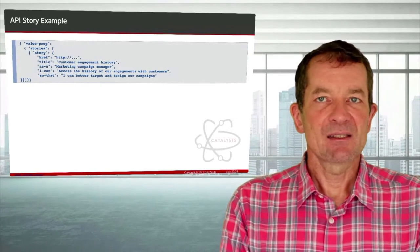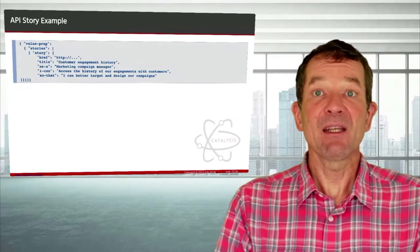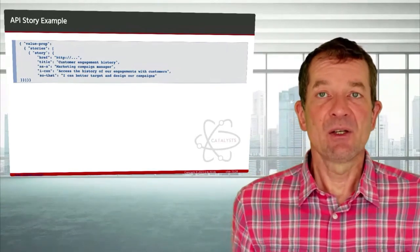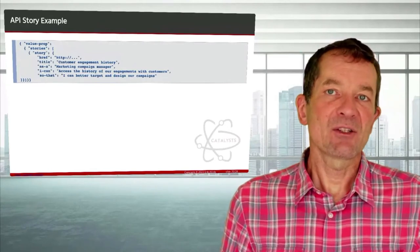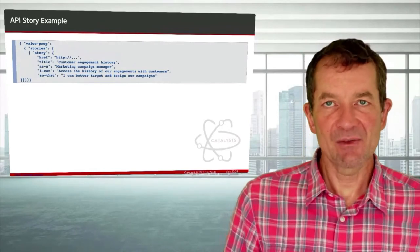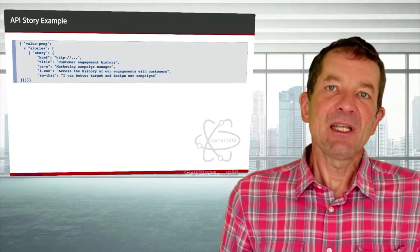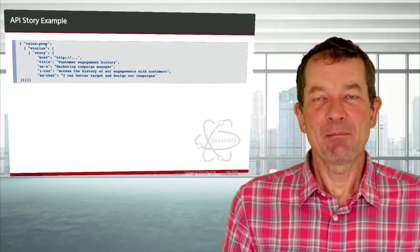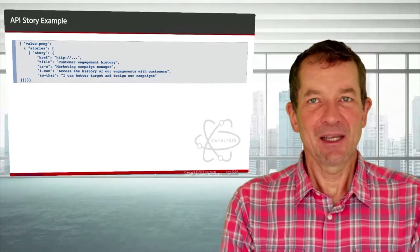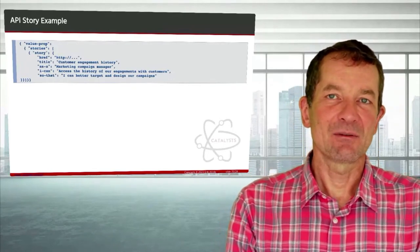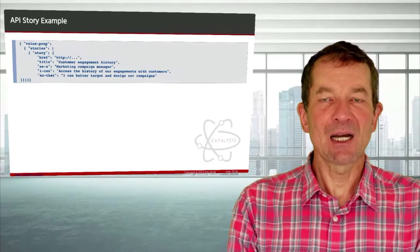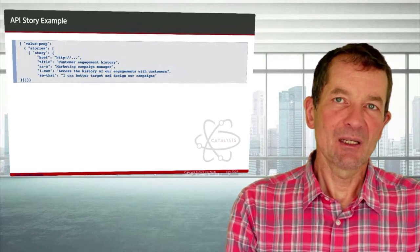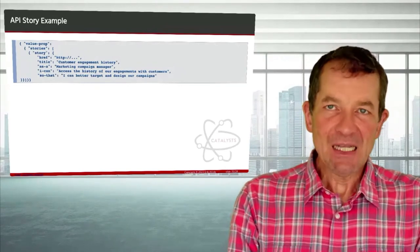So this could be a very simple way of representing user story. A value proposition for an API has a set of stories. And a story has a way how I can find the authoritative source, maybe documented somewhere in some internal system. And then there are these very simple things where it just has a title, has this as a persona, I can, and then the kind of thing they want to do, and then so that the benefit that I derive from doing that. I do believe that it's something that would help us to make it easier for people to look at an API and understand which user stories were underlying the creation of that API.